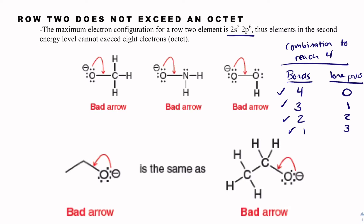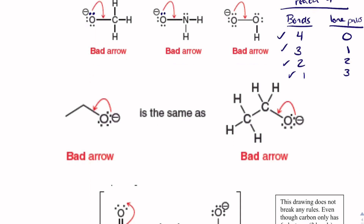Some arrows are bad because they violate that combination-of-four rule. For example, if a carbon already has four bonds, creating another bond gives it five — that's not acceptable. Taking a lone pair from oxygen and giving it to nitrogen when nitrogen already has one lone pair and four bonds would also be unacceptable. Similarly, if oxygen has three bonds it can only have one lone pair, not two. Any arrow that would push a row-two element past four bonds/lone pairs total is invalid.